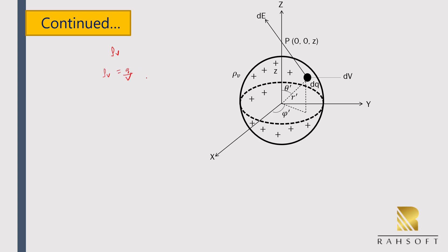Consider a small volume dV as shown in the figure, and let there be a point P at (0,0,0) where the electric field intensity is to be calculated. R is the vector drawn from dQ to point P. This differential charge dQ produces a differential electric field dE, whose value is dE equal to dQ divided by 4π ε₀ R² times unit vector aR, where aR is the unit vector in the direction of R.